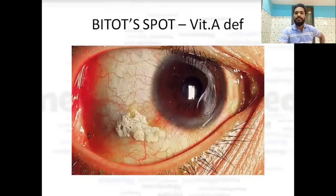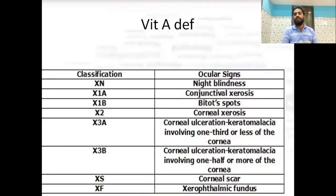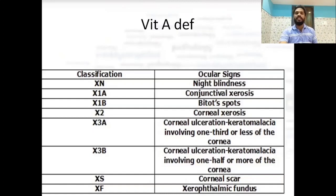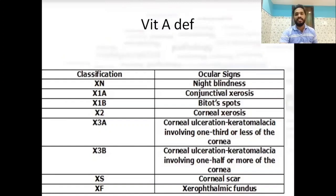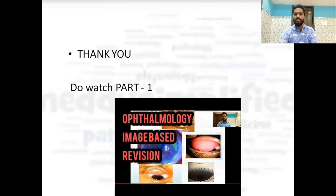Bitot's spot on the cornea is caused by vitamin A deficiency. The WHO classification of vitamin A deficiency: XN — night blindness; X1A — conjunctival xerosis; X1B — Bitot's spot; X2 — corneal xerosis; X3A — corneal ulceration or keratomalacia involving one-third or less of the cornea; X3B — involving more than half of the cornea; XS — corneal scarring; XF — xerophthalmic fundus. That concludes the second part of this ophthalmology revision.